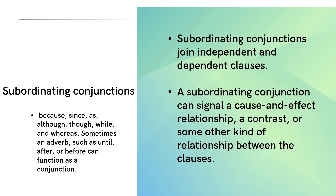The third type of conjunctions are subordinating conjunctions. They join an independent clause and a dependent clause together. One independent clause and one dependent clause are joined together by using subordinating conjunctions. There will be a cause-and-effect relationship, a contrast, or some other kind of relationship between the clauses.